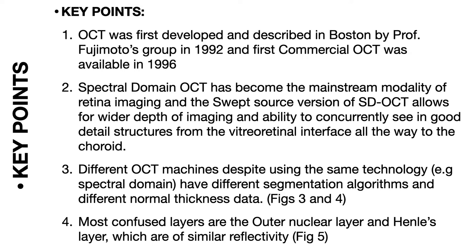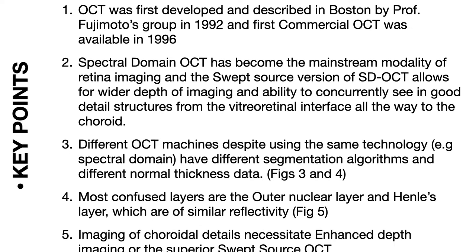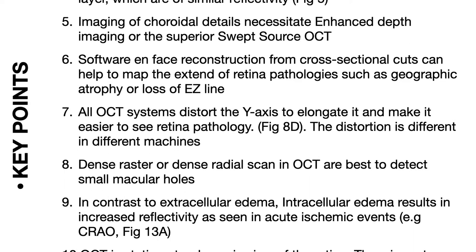Different OCT machines, despite using the same technology — for example spectral domain — have different segmentation algorithms and different normal thickness data, thus you cannot compare across machines. Most confused layers in the OCT are the outer nuclear layer and Henle's layer, which are of similar reflectivity. Imaging of choroidal details necessitates enhanced depth imaging or the superior technology of swept source OCT. All OCT systems distort the y-axis to elongate it and make it easier to see retinal pathology, and distortion is different in different machines.